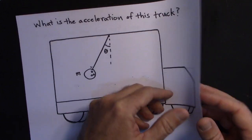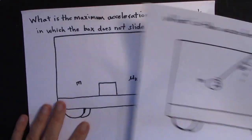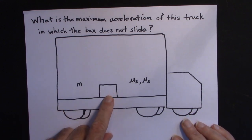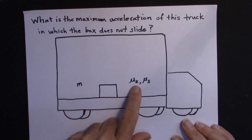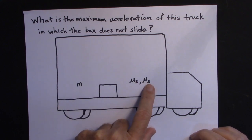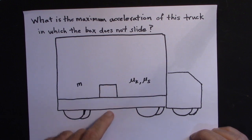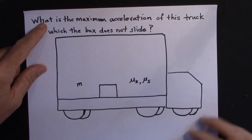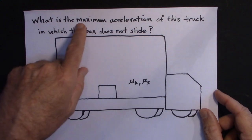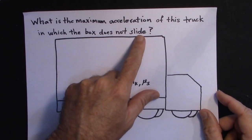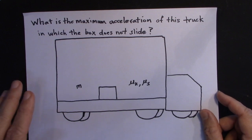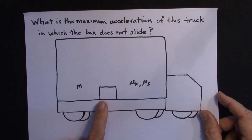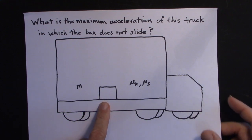I'm going to show you how to solve that, and then the next problem: we have a crate in the truck with mass m, and the coefficients of kinetic and static friction between the bed of the truck and the crate are known. What we want to know is the maximum acceleration of the truck in which the box does not slide. If you accelerated a little more, the box would begin to slide in the back of the truck.